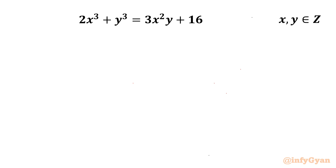Welcome to InfiGyarn friends. In this video we are having one very interesting and challenging Diophantine equation. The equation is 2x³ + y³ = 3x²y + 16, where x and y belong to integers.